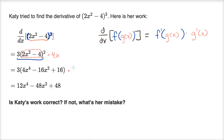So she had to have this times four x here. Not correct — she didn't correctly apply the chain rule.